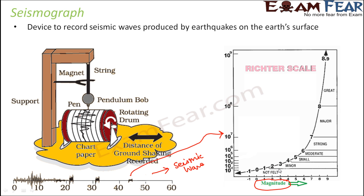The Richter scale clearly tells you what magnitude of earthquake is actually dangerous. A value of three or less is very minor and is not even felt by people. At five or six it is a moderate earthquake — you can feel the shaking but it doesn't cause destruction of life or property. But beyond seven, eight, or nine, the intensity and destructive power increase greatly, causing huge loss of life and property.